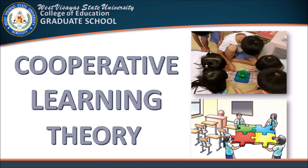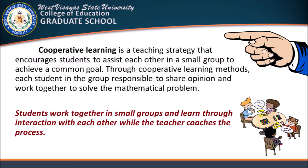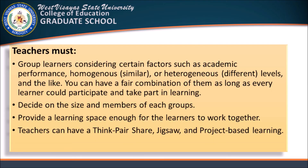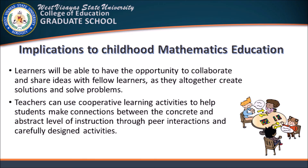Another theory is cooperative learning. Cooperative learning is a teaching strategy that encourages students to assist each other in small groups to achieve a common goal. Through cooperative learning methods, each student in a group is responsible for sharing opinions and working together to solve mathematical problems. Topics that could be taught using cooperative learning include basic mathematical operations, knowledge and measurement, and teaching through problem solving. Teachers must group learners considering certain factors to have a fair combination and provide a learning space for learners to work together. Learners will have the opportunity to collaborate and share ideas as they create solutions and solve problems. Teachers can use cooperative learning activities to help students make connections between the concrete and abstract level of instruction through peer interactions and carefully designed activities.